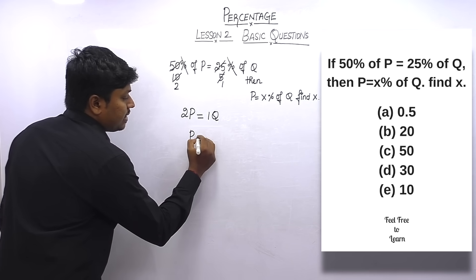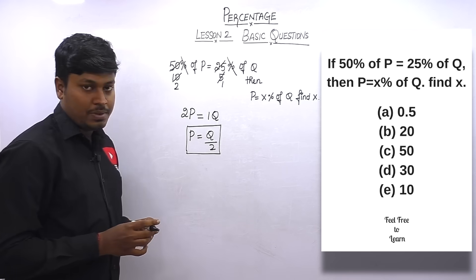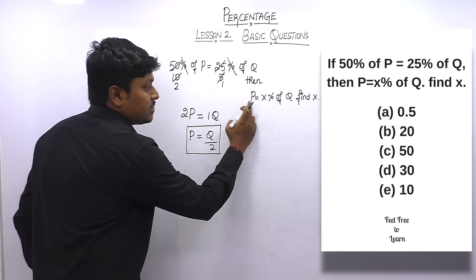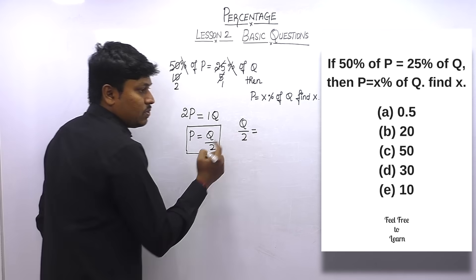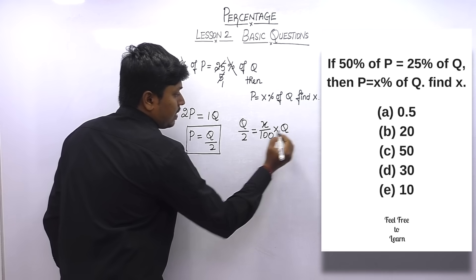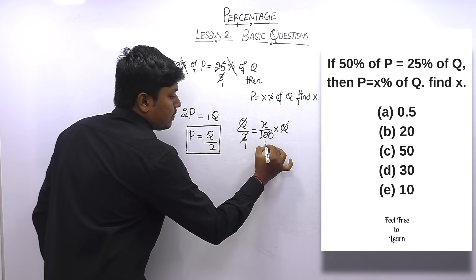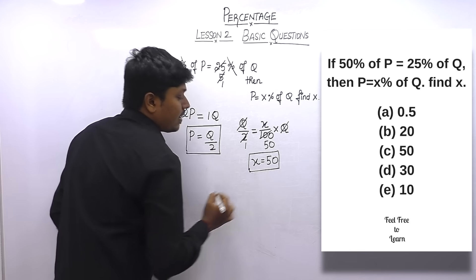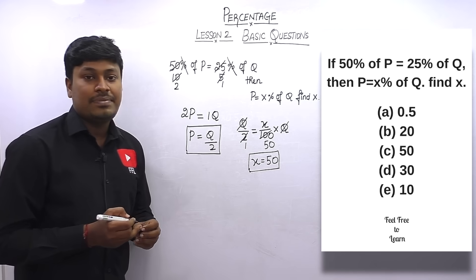We found p = q/2. Substituting into expression 2: q/2 = (x/100) × q. Cancelling q on both sides and simplifying: x = 50. So the answer for question 1 is x = 50.